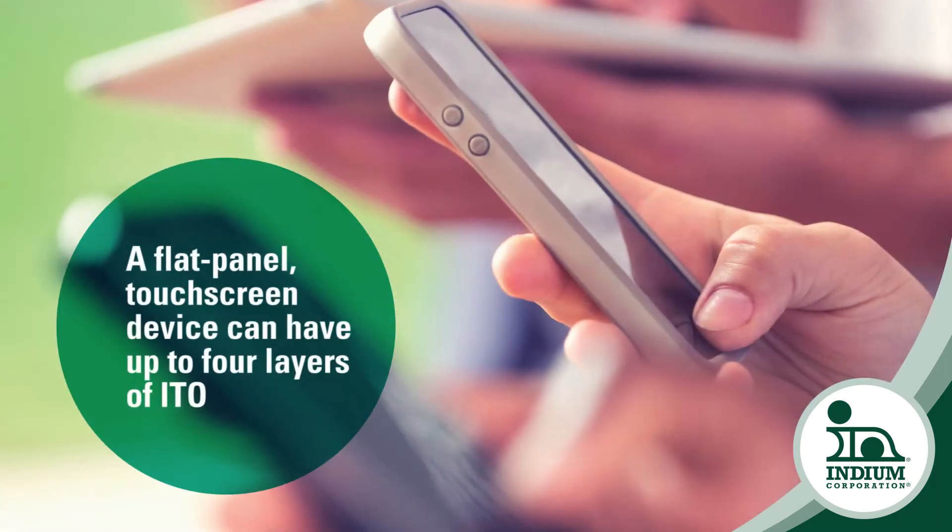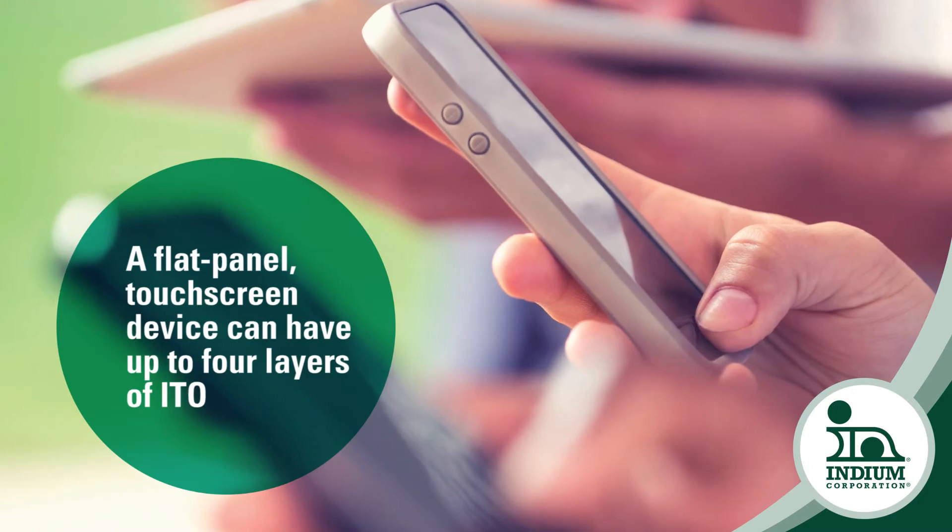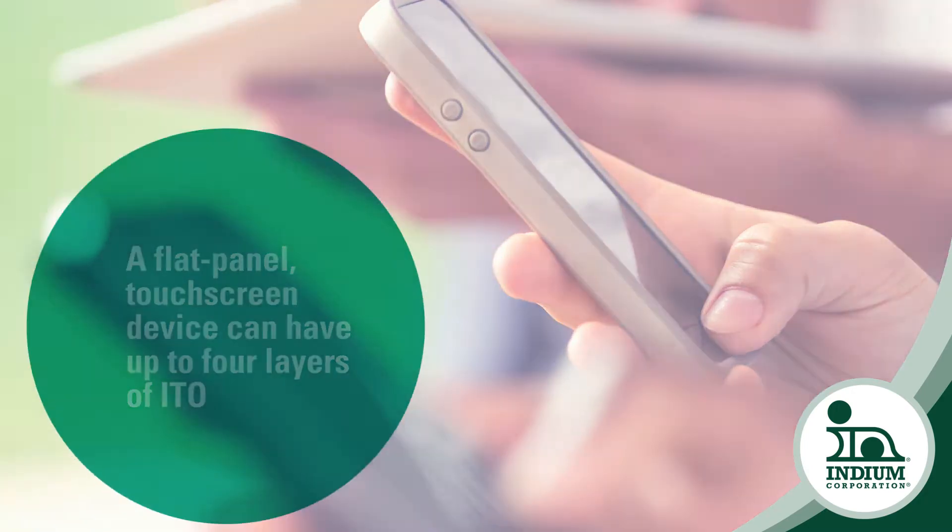Indium tin oxide is used as a clear conductive layer on almost all electronics that have a display. It's used in flat panel televisions and also for touchscreen devices. A touchscreen flat panel device could have up to four layers of ITO — very, very thin layers.